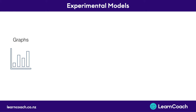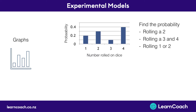Now looking at graphs, we're going to find the probability of rolling a 2. We look at the graph and trace the line back from the 2 column, which equals 0.3. This is straightforward — you're just tracing back on the graph and reading the number off. There's no calculation involved for this one.